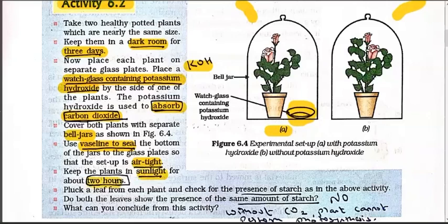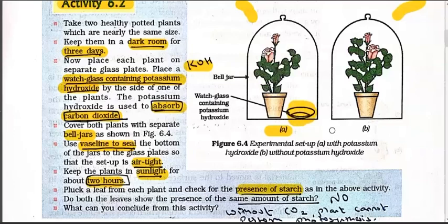Keep the plants in sunlight for about 2 hours. Then pluck a leaf from each plant and check the presence of starch as in the above activity - apply iodine and check if the color changes. The plant in setup A with KOH will not receive carbon dioxide because all the carbon dioxide in flask A will already have been absorbed. The potted plant in A will not get carbon dioxide and hence no new starch will be produced in that leaf. But in plant B, starch will be detected and blue-black color patches will appear due to iodine.